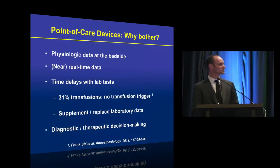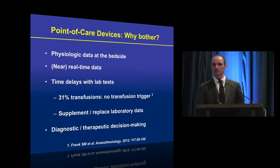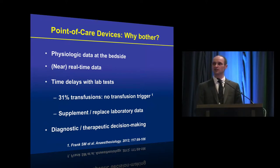The potential advantages of these devices are that you get physiological data at or near the patient's bedside. In some cases, such as the non-invasive hemoglobin monitor, you can get near real-time or real-time data because it's a continuous monitor. Both of these attributes are important because if we're sending off blood to the lab, we incur time delays between the time you remove blood from the patient and when you get the result back from the hematology technician.